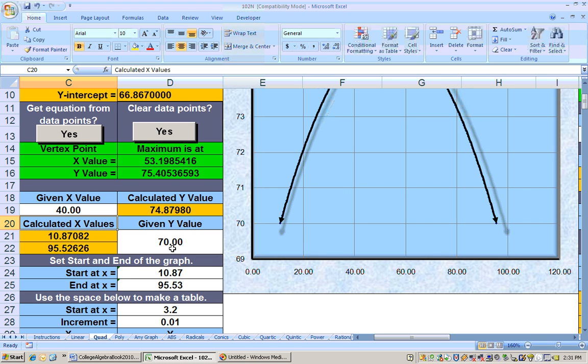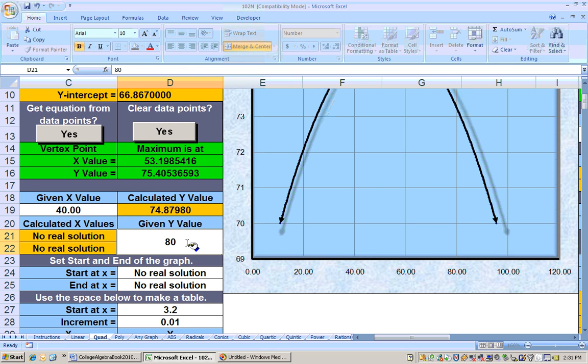And if we were asked, when will the average, and what year would you, when would you need to be born so that your average life expectancy would be 80 for the people born in that year? Well, if we put 80 in here, we're going to get no real solution.